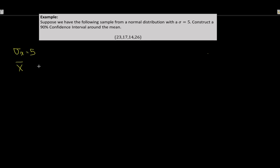Next, am I using a z or a t? If I know the population standard deviation sigma, I'm going to be using a z. So the formula is x-bar plus or minus z-90, times the standard deviation of x, all over root n. I have all my parts — the question is what exactly is my sample size and what is my x-bar? I know sigma is five, and I can work out the value of z.